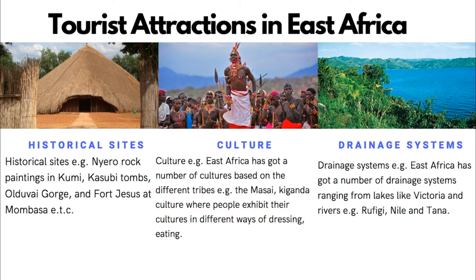We have different mountains: Kilimanjaro, the highest mountain in East Africa and in Africa; the Mountain of the Moon, that's Mount Rwenzori; Mount Kenya; and the Great East Africa Rift Valley. Historical sites are another big tourist attraction — for example the Kasubi Tombs, Fort Jesus, and Olduvai Gorge. Culture is also a draw — East Africa has diverse cultures with different tribes such as the Maasai, Baganda, Kalenjin, and Kikuyu.